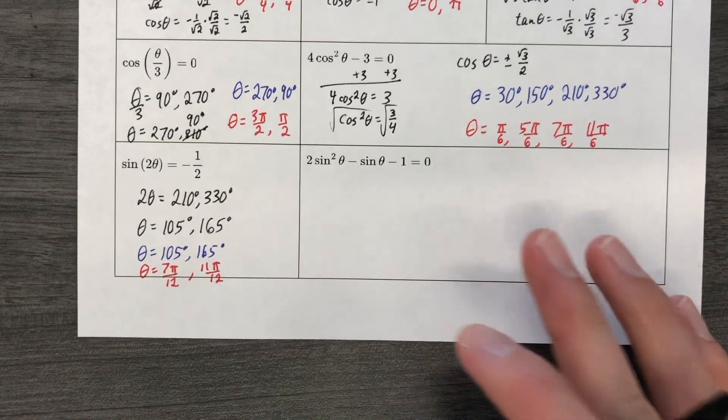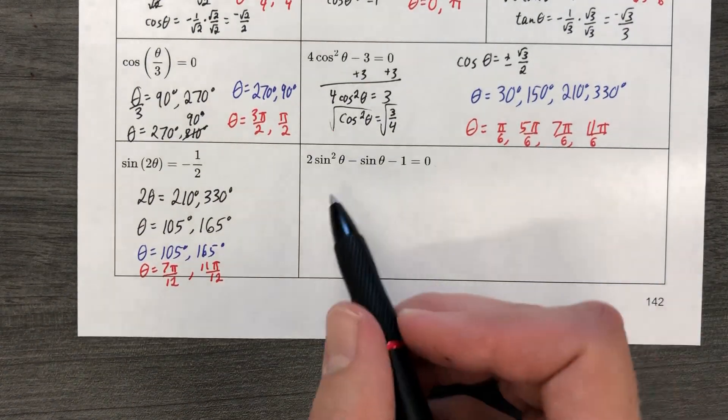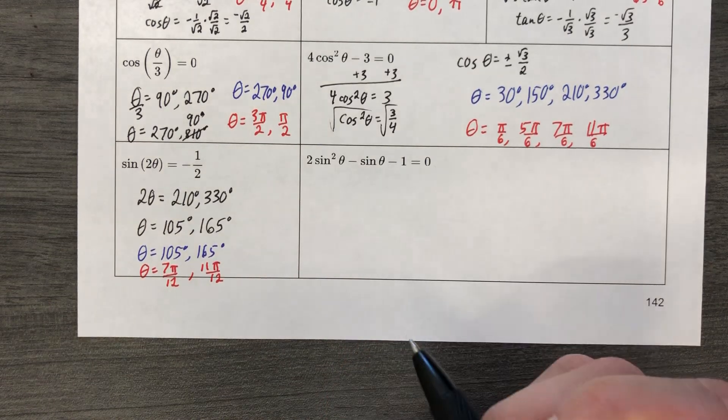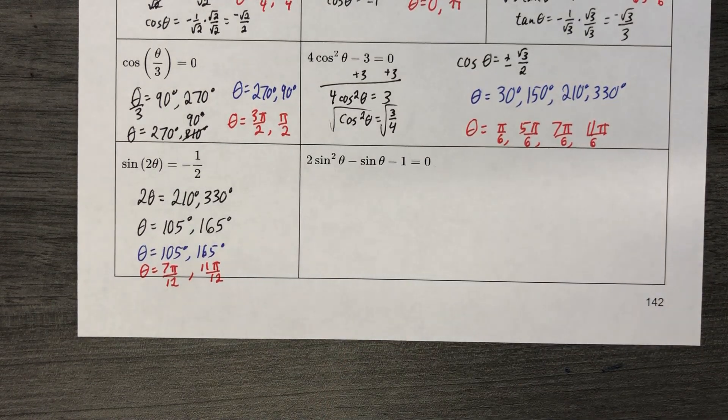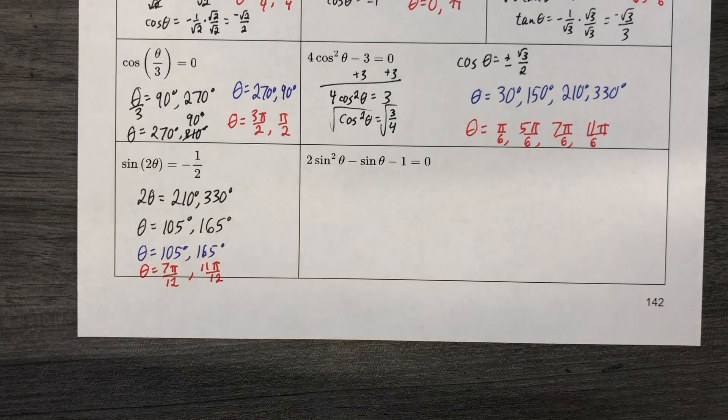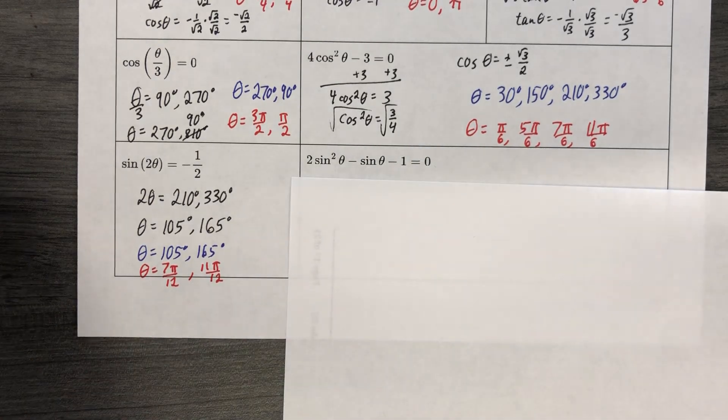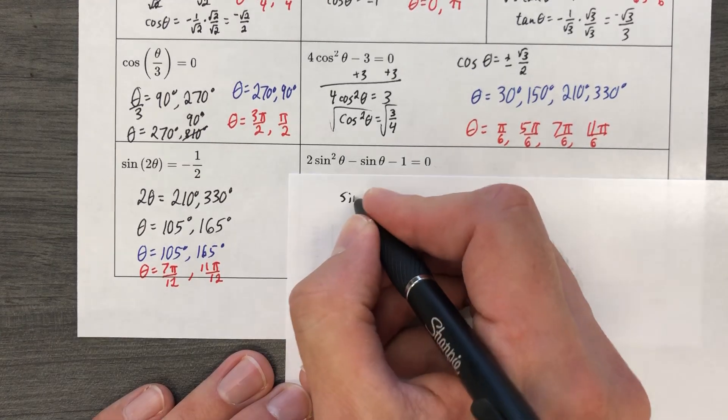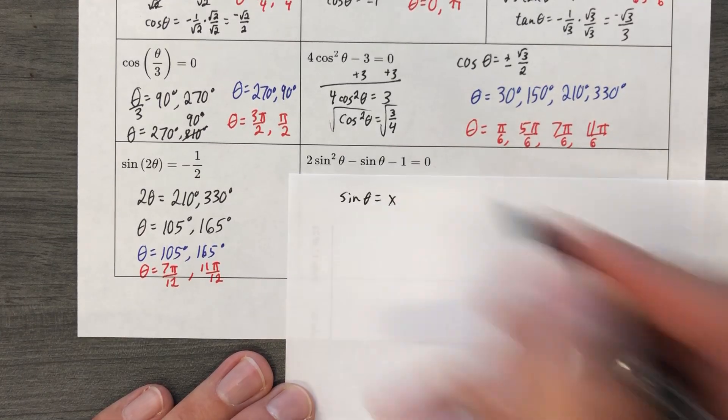Last one. Don't cry. Don't cry. 2 sine squared theta minus sine theta minus 1. What? Oh my goodness. What a mess. What an absolute disaster of a mess. Let's clean this up. Instead of 2 sine squared theta minus sine theta minus 1, let's just say that sine theta equals x.